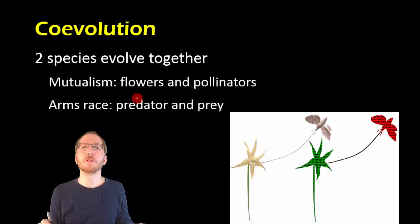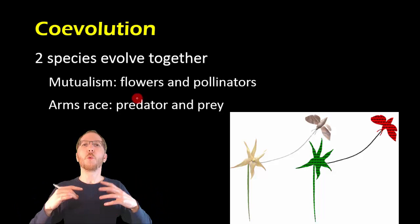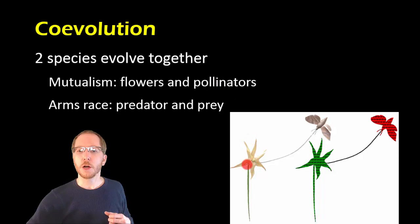Now coevolution goes with this fact that oftentimes things aren't evolving in isolation, they're evolving with something else. So you can have instances, like with this flower, where the flower has a very long tube where the nectar's at the bottom. And so this has evolved with a particular type of moth that has a really long proboscis.